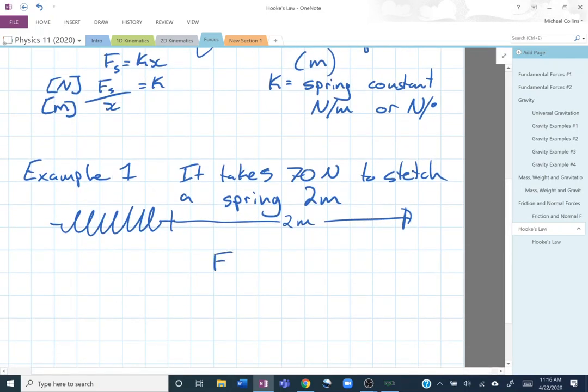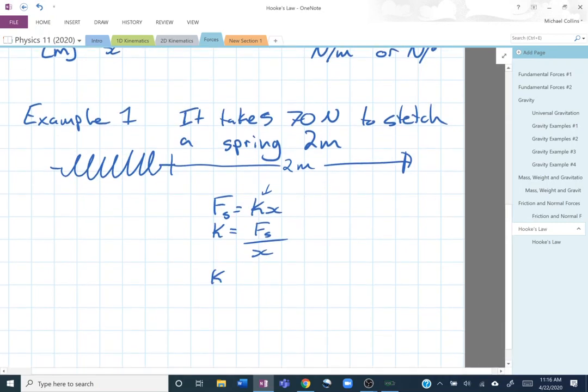So we've got our F_s is equal to kx. Our force, and we want to rearrange it for k first so I can divide both sides by x. I get k is equal to F_s divided by x. So my k for this particular spring is going to be 70 newtons divided by two meters. So my k is going to be 35 newtons per meter.